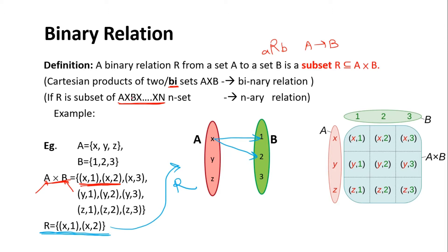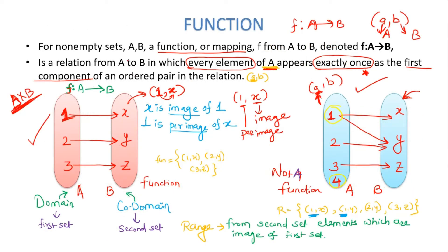If you add some additional rules when taking a subset of the Cartesian product, then that set will be called a function. For non-empty sets A and B, a function or mapping F from A to B — denoted F: A → B — is a relation from A to B in which every element of A appears exactly once as the first component of an ordered pair in the relation.